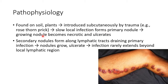The growing nodule becomes necrotic and ulcerates. Secondary nodules form along lymphatic tracts draining the primary infection. As you can see in this picture, there are secondary nodules along the lymphatic tracts. The nodules grow and ulcerate. It is important to remember that the infection rarely extends beyond the local lymphatic region.